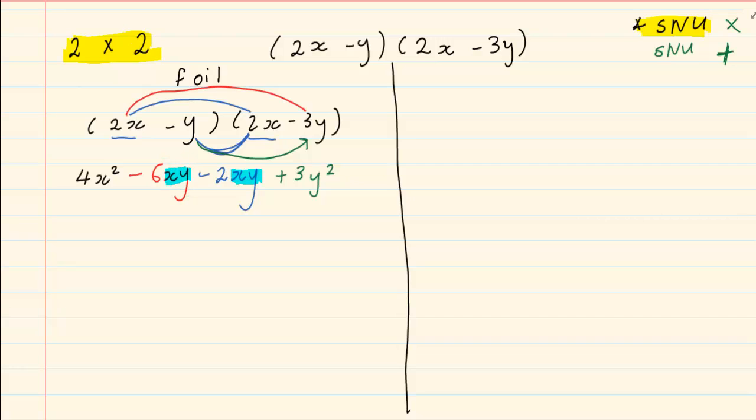So we have 4x squared. There is no other expression that is exactly like x squared. But minus 6 minus 2. I am subtracting.